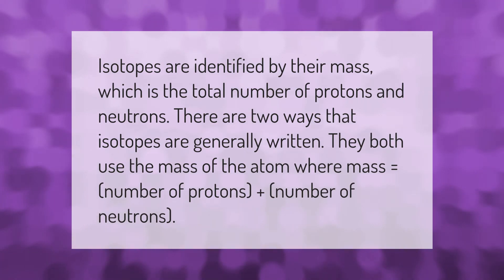Isotopes are identified by their mass, which is the total number of protons and neutrons. There are two ways that isotopes are generally written. They both use the mass of the atom, where mass equals number of protons plus number of neutrons.